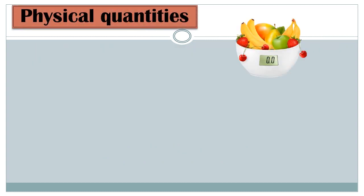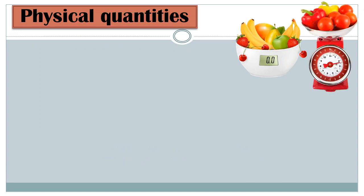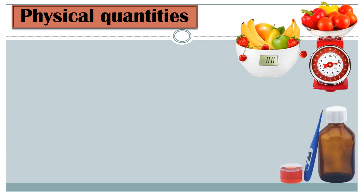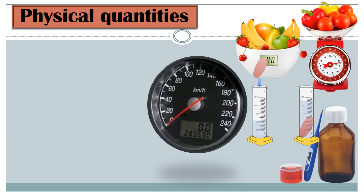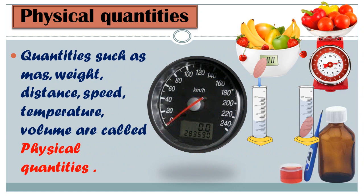So what are physical quantities? In day-to-day life we measure many things such as weight of fruits, vegetables, food grains, temperature of the body or liquids, volume of liquids, density of various substances, speed of vehicles, etc. Quantities such as mass, weight, distance, speed, temperature, and volume are called physical quantities — these are quantities we use in our daily life.